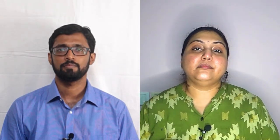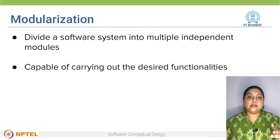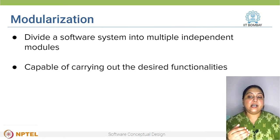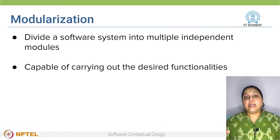So in week one, we looked at how a relatively large software like Amazon is built. It is made up of several interworking modules. This concept is known as modularization. Modularization is used to divide a software system into multiple independent and co-working modules. These modules are capable of carrying out the desired functionalities and they form the basic building blocks for the entire software.